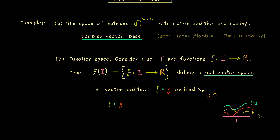Formally, this means: if you put in a point x from I, you put it into f and g and add the two values. What we use on the right-hand side is the ordinary addition in the real number line — something we know very well — and we use it to define a new addition for this set.